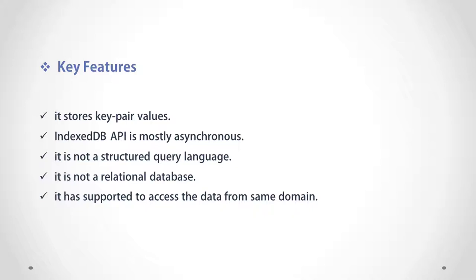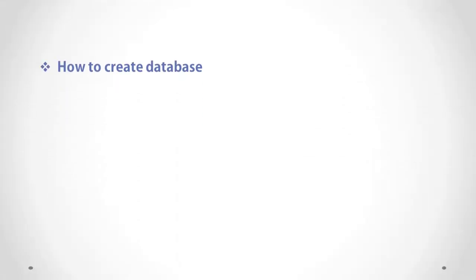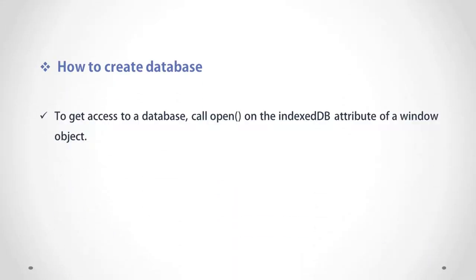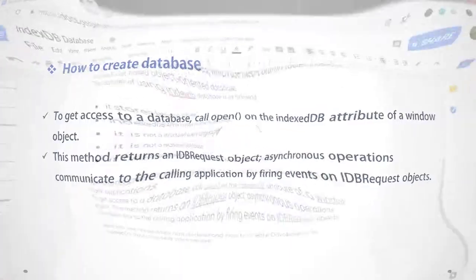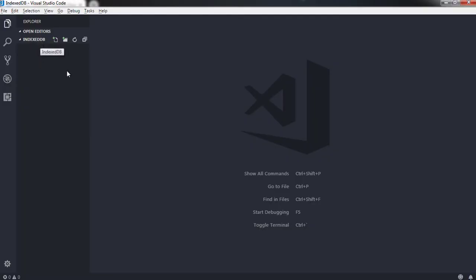Operations performed using IndexedDB are done asynchronously so as not to block applications. To get access to the database, call open on the indexedDB attribute of a window object. This method returns an IDBRequest object. Asynchronous operations communicate to the calling operation by firing events on the IDBRequest object. Now let's take an example and understand how to create a database using IndexedDB and store values in that database.